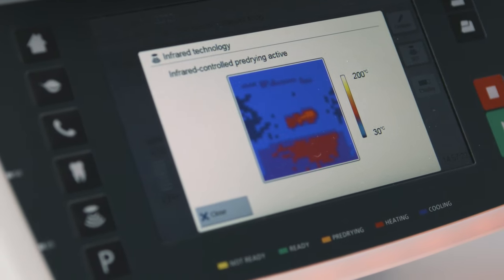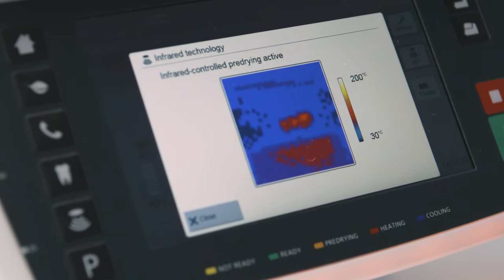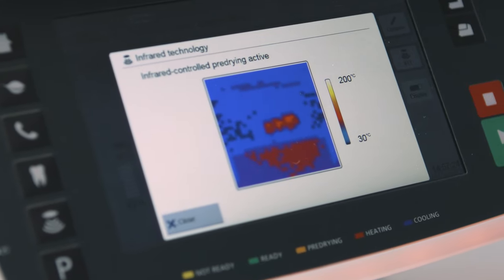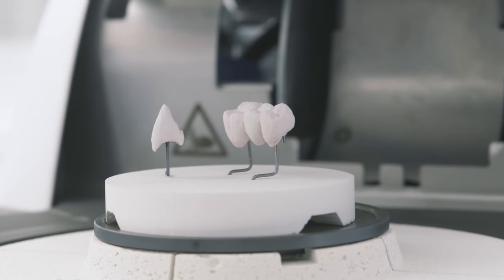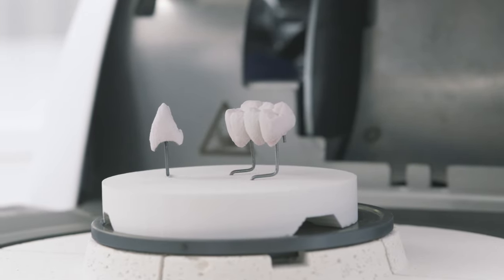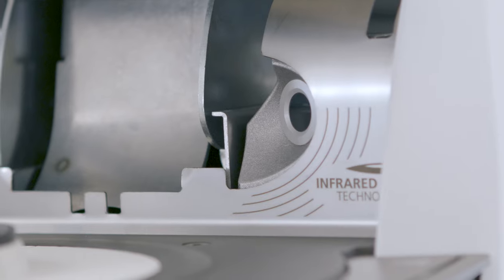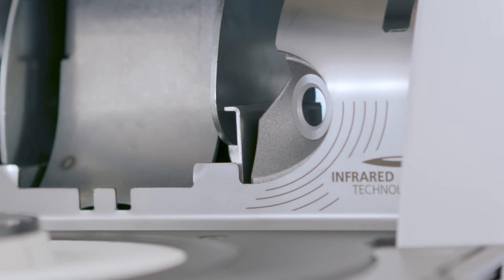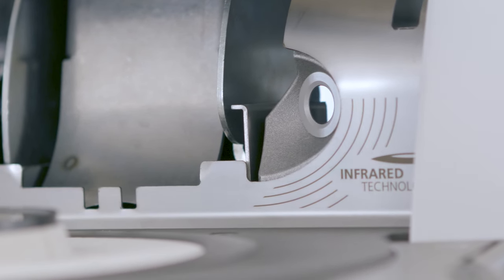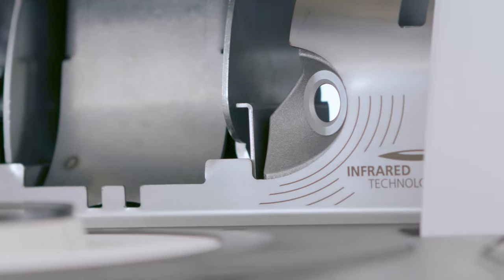The software uses the data it receives from the sensor to determine the optimal pre-drying and closing parameters, independent of the size and number of restorations placed in the firing chamber. The sensor also uses the temperature data measured on the object being fired to determine when the drying process is complete and the firing process can begin.